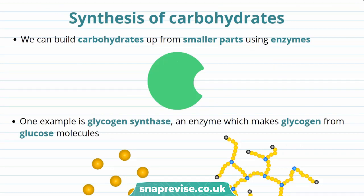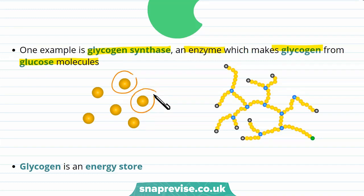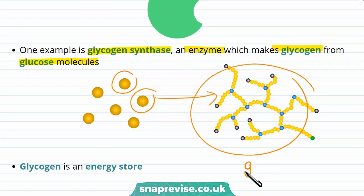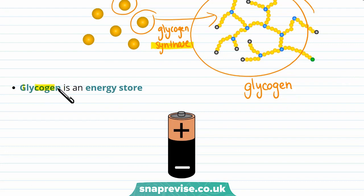We can also build carbohydrates up from smaller parts using enzymes. One example is glycogen synthase, an enzyme which makes glycogen from glucose molecules. You can see that lots of glucose molecules form this structure called glycogen, done through the enzyme glycogen synthase — it has 'synthase' in the name because it synthesizes glycogen. Glycogen is really important in the body as it's used as an energy store.